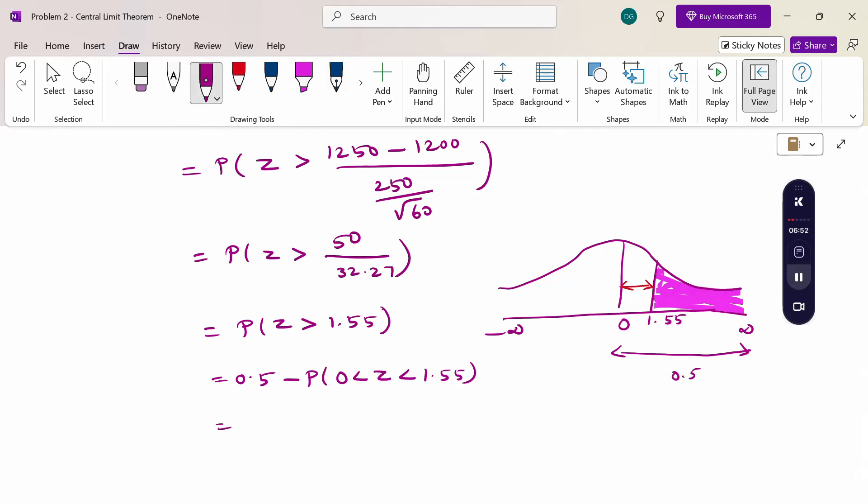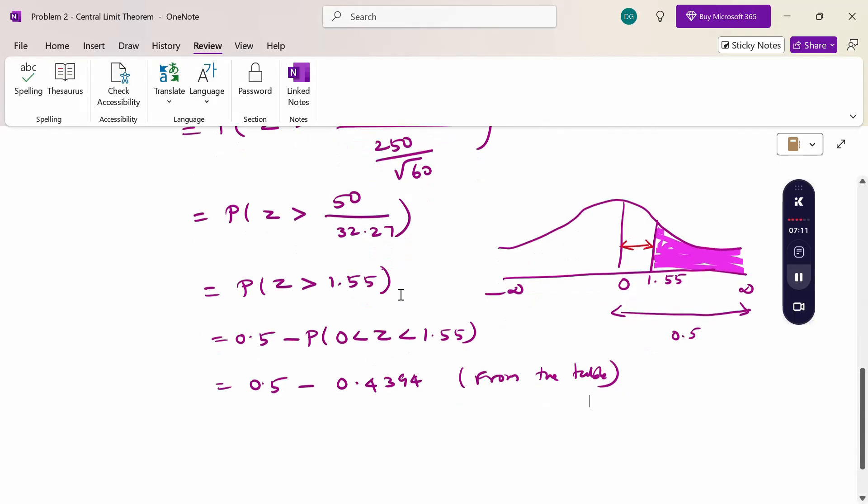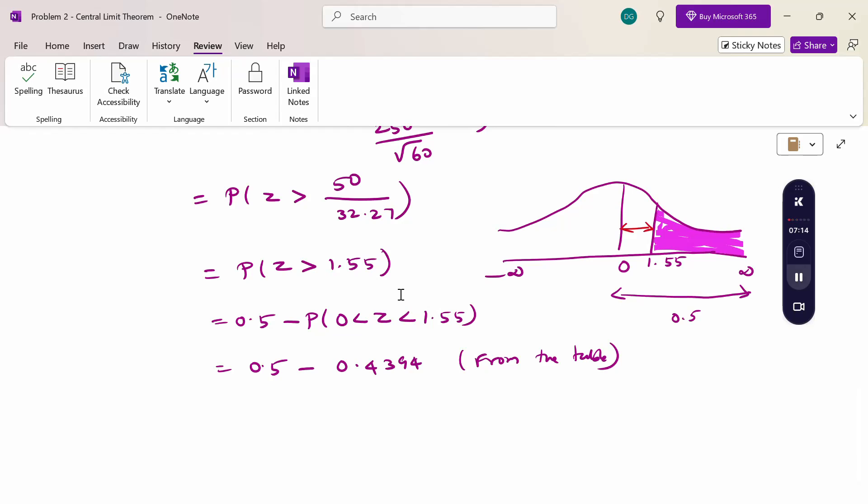Now 0 to 1.55, see the normal table. In the normal table, 1.55 value is 0.4394. So 0.5 minus 0.4394 from the table. How to see the table, the previous video I uploaded, please refer. Now 0.5 minus 0.4394 equals 0.0606. This is the value. X bar greater than 1250, exceeding 1250, is probability 0.0606.